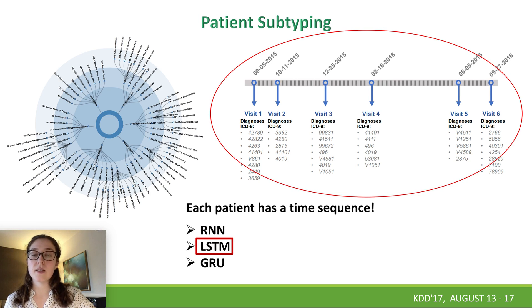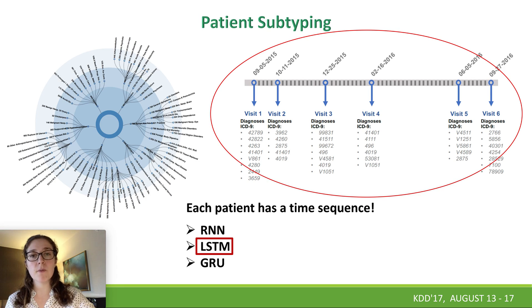However, if we look at this example, we can see there are time irregularities, which means that the elapsed time between successive visits can be days, months, or even years. In fact, this information is valuable for clinical decision-making.